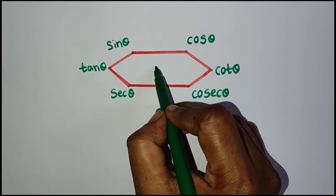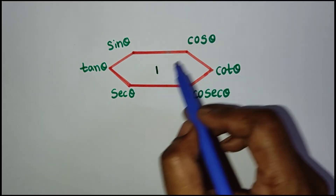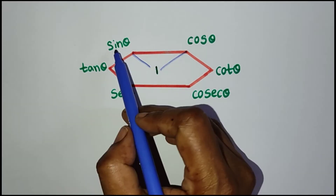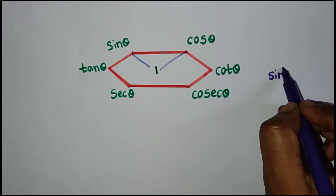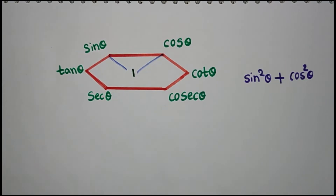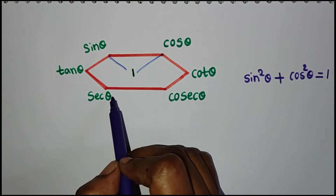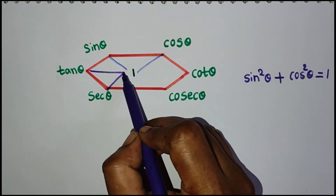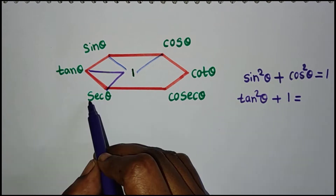Now take one value in the middle. You can write trigonometric formulas using these hexagon values. The first formula is: sin squared theta plus cos squared theta equal to one. Another formula is: tan squared theta plus one equal to secant squared theta.